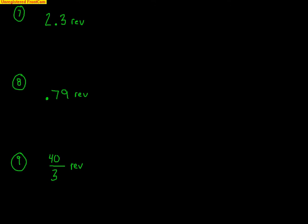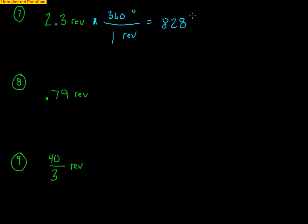Let's do a couple more with revolutions. For 2.3 revolutions — that's two full revolutions plus 0.3 of a revolution. To convert to degrees: put revolutions on the bottom, degrees on top. One revolution equals 360 degrees, so 2.3 times 360 gives 828 degrees. To then convert to radians: multiply by π over 180 degrees, degrees cancel, and hold the pi. 828 divided by 180 gives 23 fifths, so I get 23π over 5.